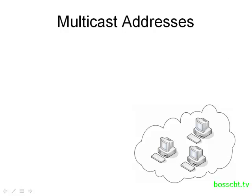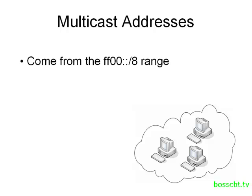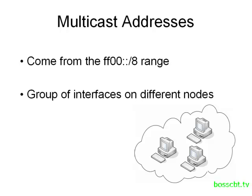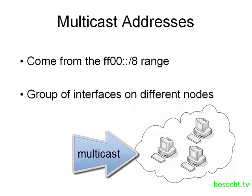Up next is multicast. Multicast behaves the same way in IP version 6 as it does in version 4. You can easily identify an IPv6 multicast address because they all come from the same range — FF::/8. If you see an IPv6 address beginning with FF, you immediately know it's a multicast address. Multicast represents a group of devices or interfaces on different devices. If you want to reach all members of that group, you send a packet to the multicast address and they all receive it.